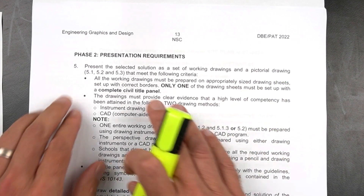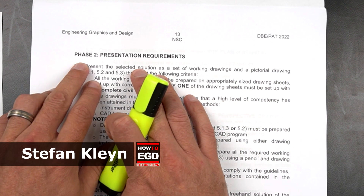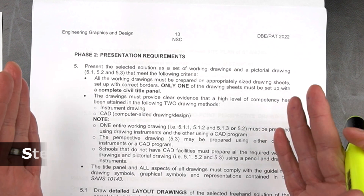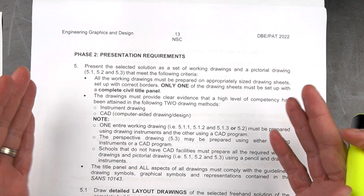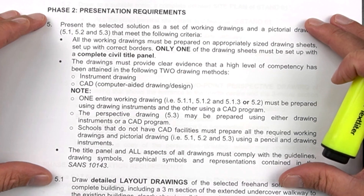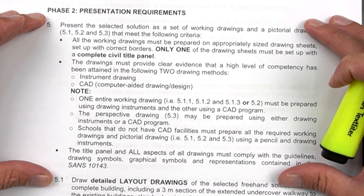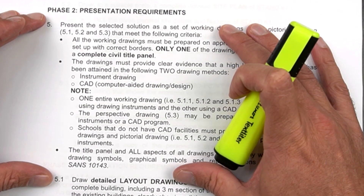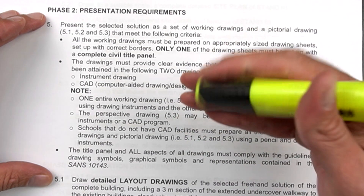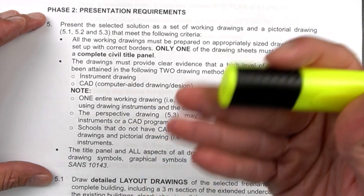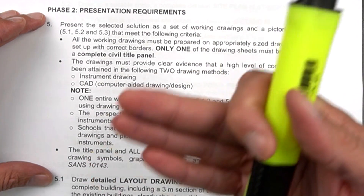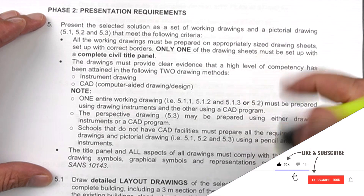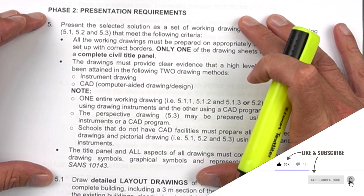This is the first video where we zoom in on Phase 2 presentation requirements for the Grade 12 EGD PAT. I'm going to be discussing point number five and detailing one or two important matters. In the next videos we look at the actual layout drawings, which will include your floor plan, your elevations, and your detail section — so make sure you like, share and subscribe to get those videos coming soon.